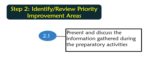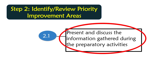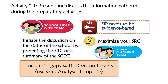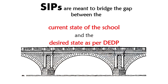We try to identify priority improvement areas. Present and discuss the information gathered during the preparatory activities. Initiate discussion on the status of the school by presenting the SRC or the summary of the SCDT. Look into the gaps with division targets and use the gap analysis template — to see what are really the missing parts, the most pressing problems in our data. SIPs are meant to bridge the gap between the current state of the school and the desired state as per the EDP. All these things are our bridge to being better as a school, based on the gaps we identified in the first part.